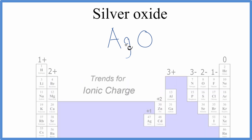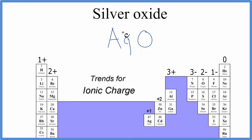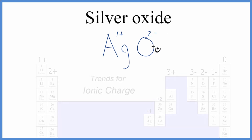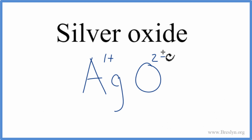Silver's a little bit odd — it always has a charge of 1+, even though it's a transition metal. So silver's kind of an exception; it's always 1+ for the transition metals. Oxygen is 2-. So these charges will need to add up to 0 for this compound to be neutral. Silver oxide is a neutral compound.